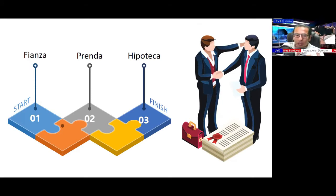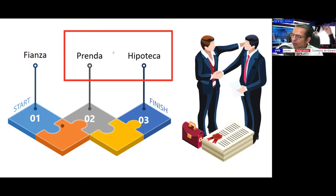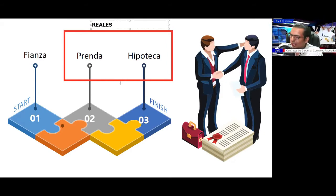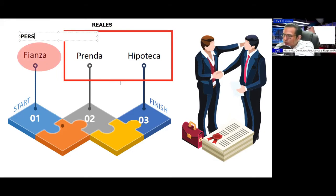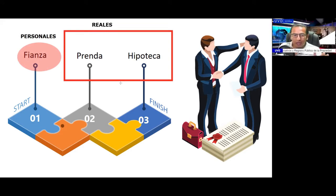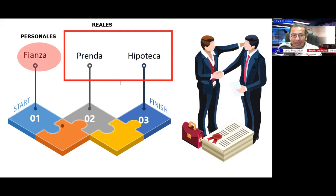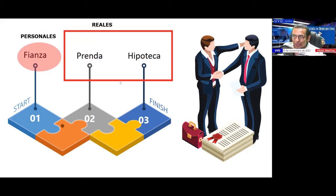If we highlight the prenda and the hipoteca, we find that they are real contracts, while the fianza falls within the nature of personal contracts. In the fianza contract, a person commits to the creditor to pay in case the debtor does not fulfill the principal obligation assigned.